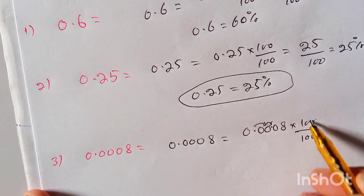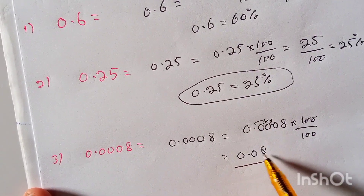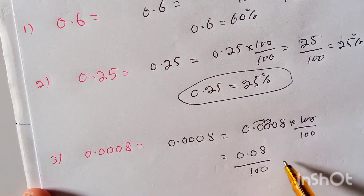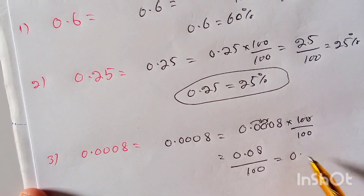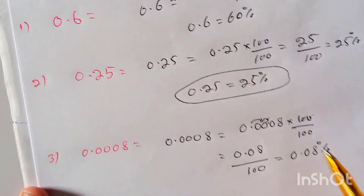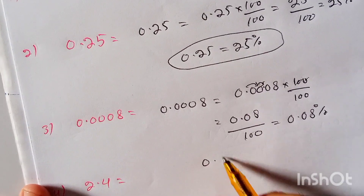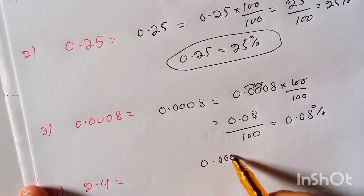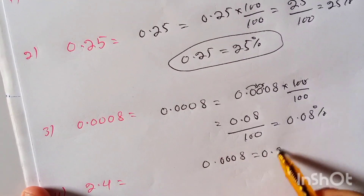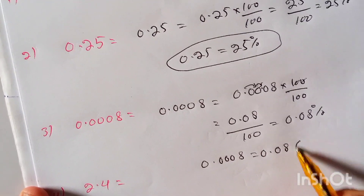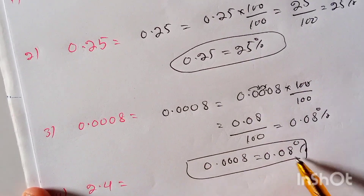We eliminate the zeros, which gives us 0.08 divided by 100, or we can write it as 0.08 percent. So 0.0008 is equal to 0.08 percent. That is the final answer.